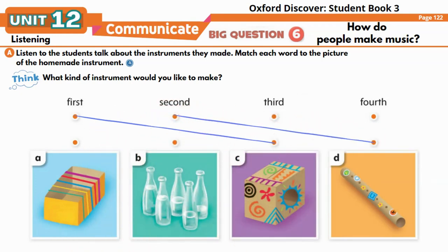Our third instrument is similar to a pan flute. These five glass soda bottles are the same size, and our group put different amounts of water in each bottle. I blow across the top edges of the bottles. Our fourth instrument is similar to an erhu or violin — we put rubber bands of different sizes across a box and plucked the strings.